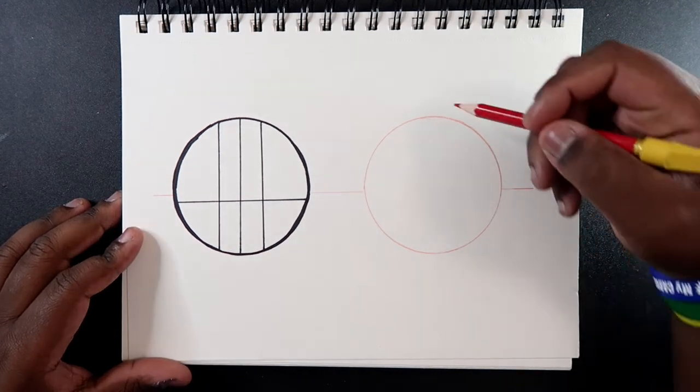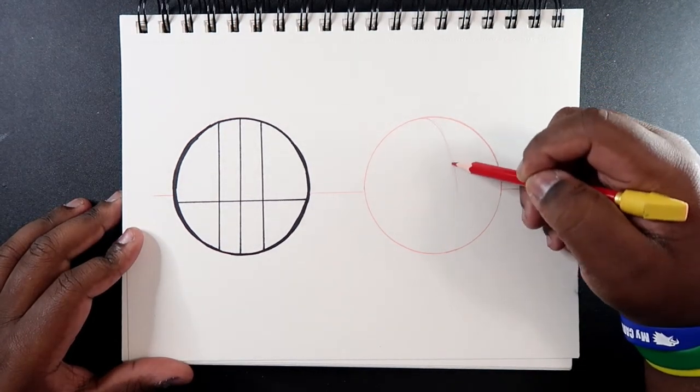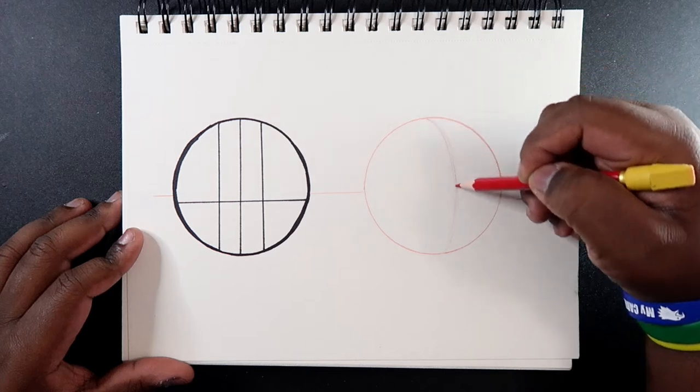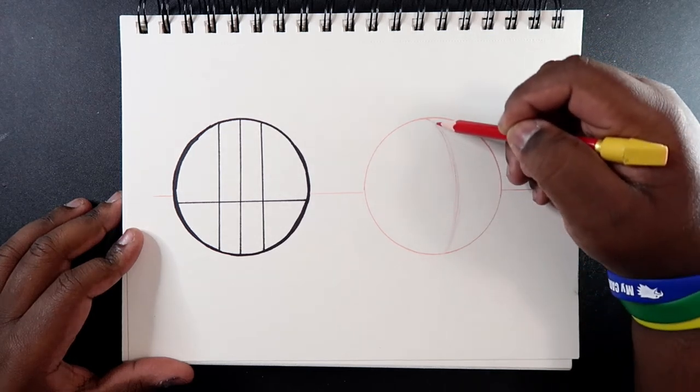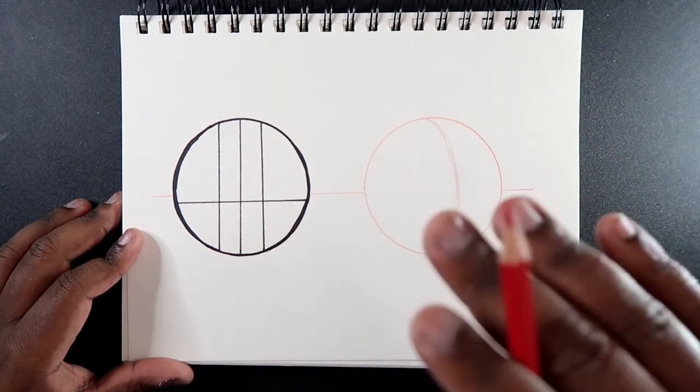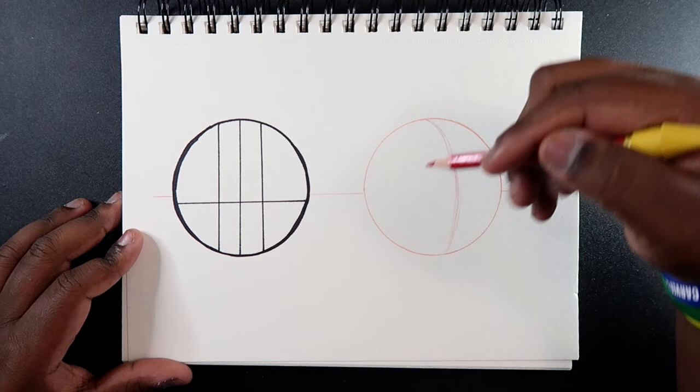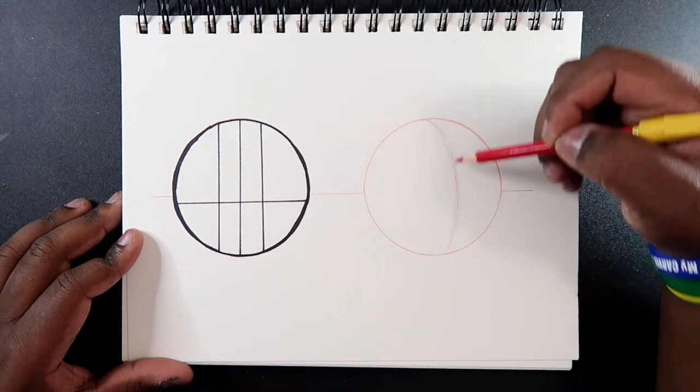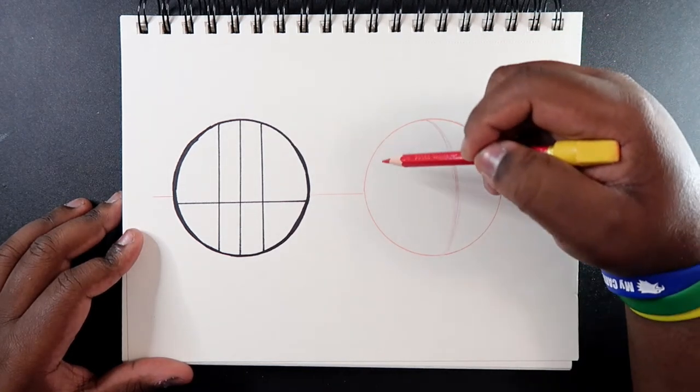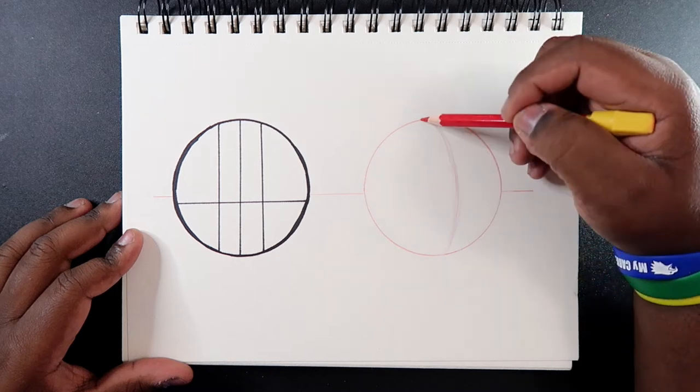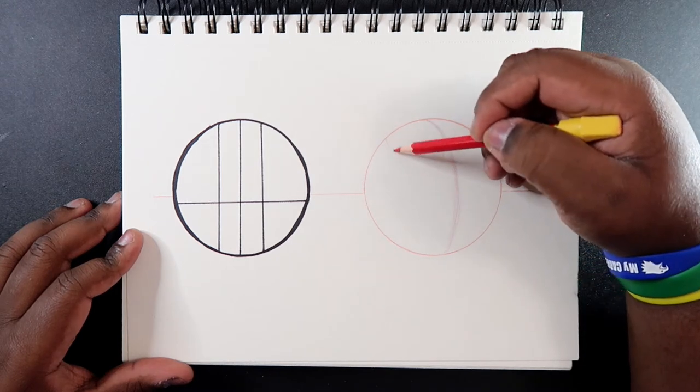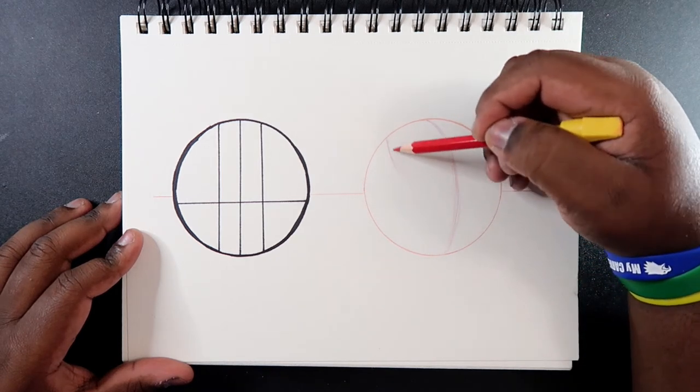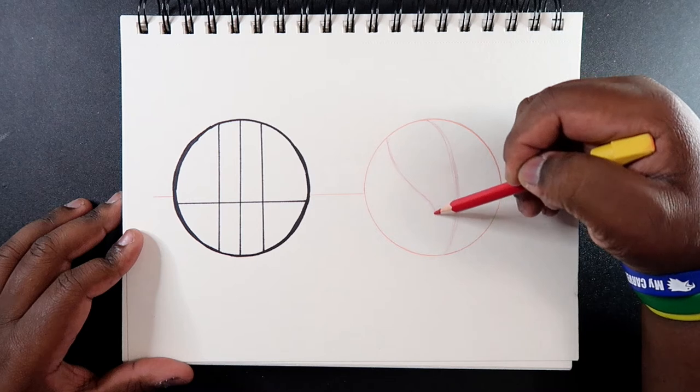So I'm gonna start off drawing a line just like this, more like a center line but at like a three-quarter view kind of. So instead of going like right next to this line, I'm gonna come off like about halfway. To this point from this point I'm gonna come in just like this.